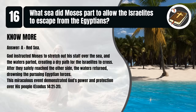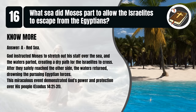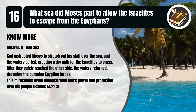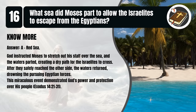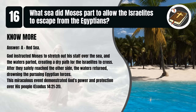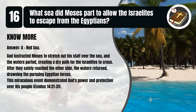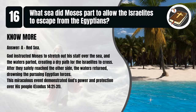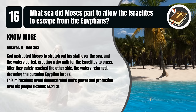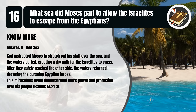That's A. Red Sea. The waters returned, drowning the pursuing Egyptian forces. This miraculous event demonstrated God's power and protection over his people. Exodus 14:21-31.